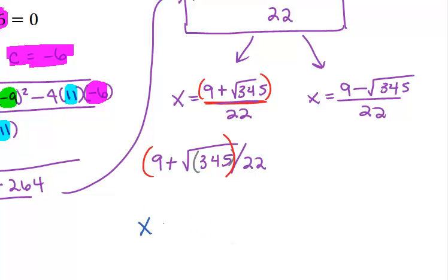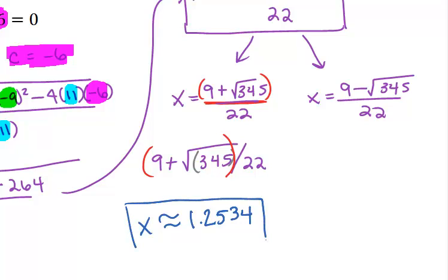The way we fix this is to put parentheses around the top, so the calculator reads the entire numerator divided by 22. Typing it in: open parentheses, 9, plus square root — which opens another parentheses — 345, close the square root parentheses, close the numerator parentheses, then divide by 22. Your calculator should give 1.25337, which we round to four decimal places. If you have a newer calculator, you may not need the double parentheses.